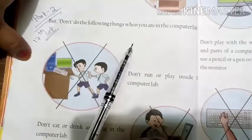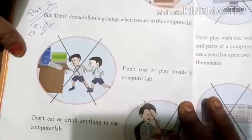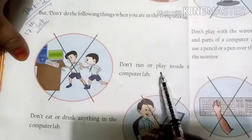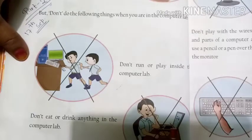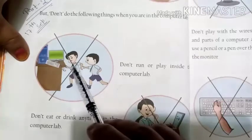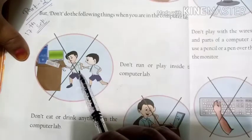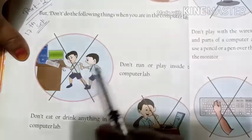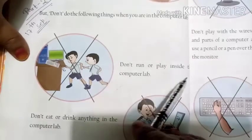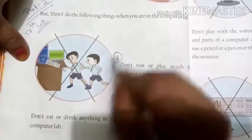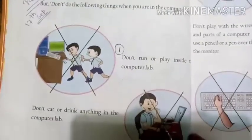The first instruction is: don't run or play inside the computer lab. Here you can look at the picture — the children are playing inside the computer lab, but you are not supposed to do that. So don't run or play inside the computer lab. This is the first instruction.